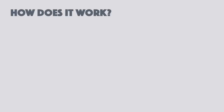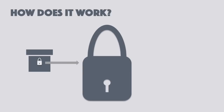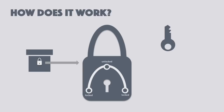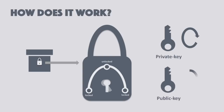Let us understand it with an easy analogy. Public key cryptography works like a special kind of lock. This lock has three states: two states are locked and one state is unlocked. A private key can only turn this lock in a clockwise direction, and a public key can only turn this lock in an anti-clockwise direction. Yes, that is one weird lock — but let's see how it aids us in accomplishing public key cryptography.